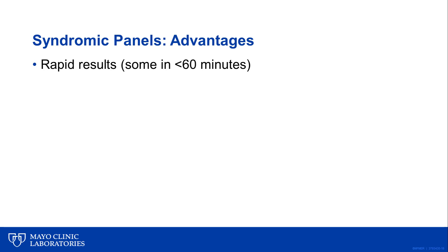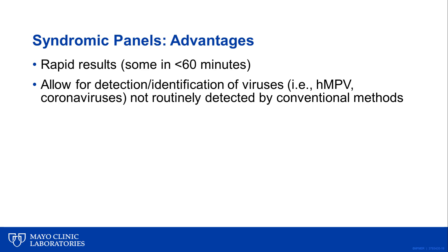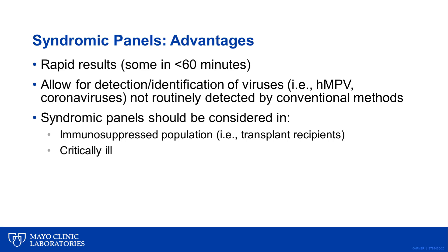As we've discussed, multiplex respiratory panels offer a number of advantages over conventional tests, including the potential for rapid results, with some systems being able to provide a report in less than 60 minutes. Several commercial assays also allow for the detection and identification of certain viruses, such as human metapneumovirus and the coronaviruses, that were not routinely tested for in most clinical labs. Due to these benefits, multiplex respiratory panels should be considered in immunosuppressed patients or those that are critically ill.